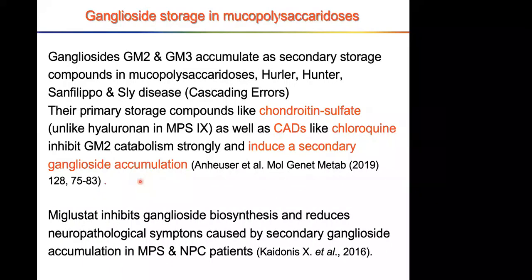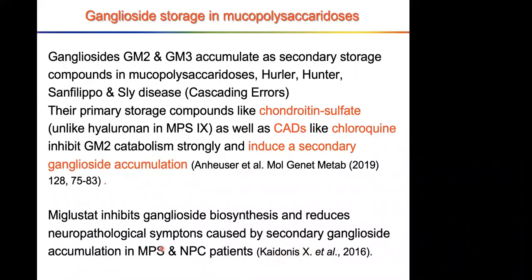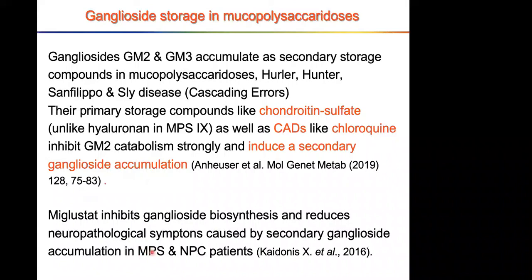In a recent review, we listed about 20 different cationic amphiphilic drugs available in the pharmacy that generate this situation. Interestingly, a laboratory in Australia used an inhibitor of ganglioside biosynthesis — miglustat from Frank Platt — to reduce the neuropathological symptoms caused by secondary ganglioside accumulation in mucopolysaccharide diseases and also in Niemann-Pick disease type C patients.